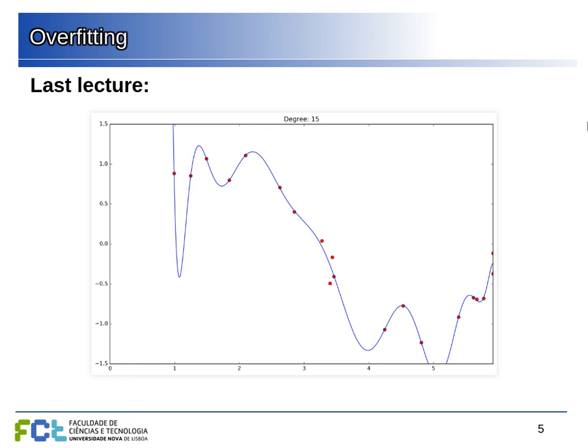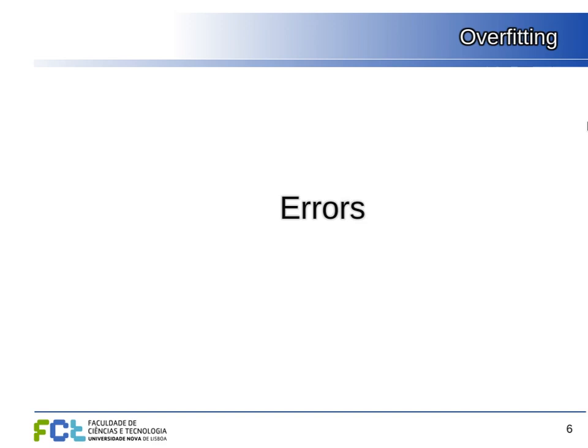At some point we are fitting the training data too well, which means that outside our examples we may be increasing the error. This is bad because usually what we want is to extrapolate from the data we have to something we don't yet know — to predict something accurately. Even if we decrease the error on data we already know, that's not very useful because we already know those values. This is the problem of overfitting.